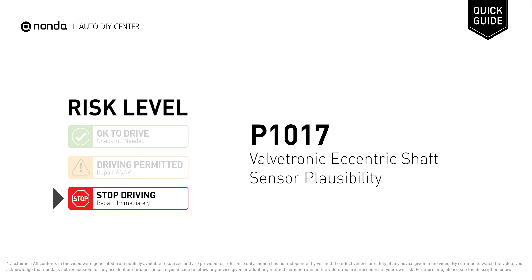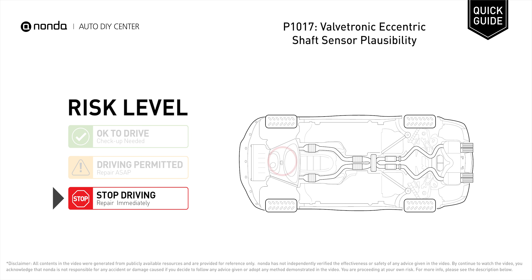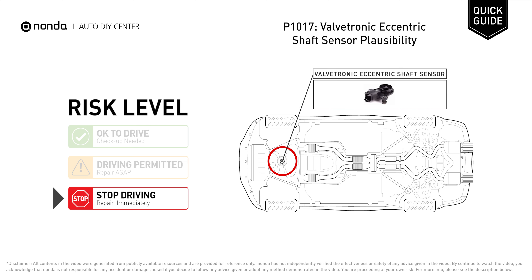P1017 is a diagnostic trouble code for Valvetronic Eccentric Shaft Sensor Plausibility. Under this circumstance, stop driving and repair your vehicle immediately. It indicates that the Valvetronic Eccentric Shaft Sensor is not to factory specifications.